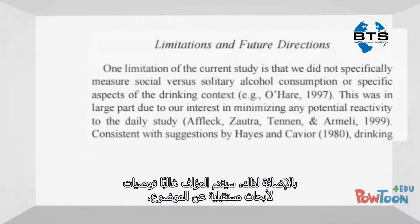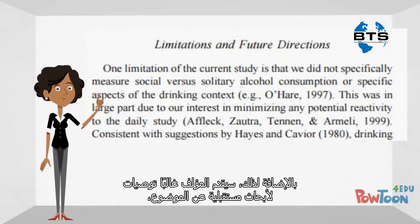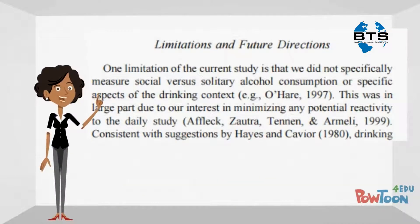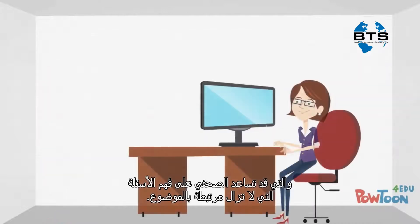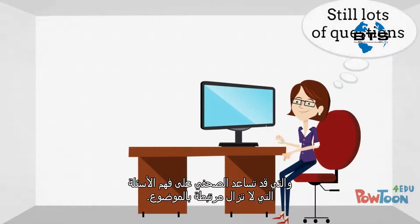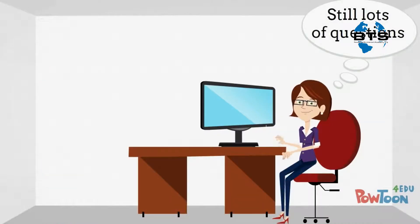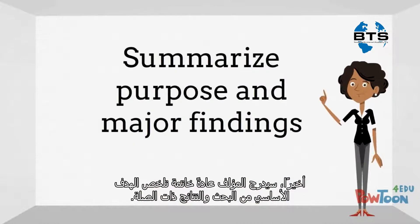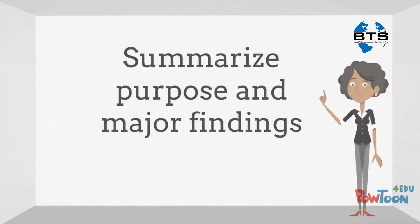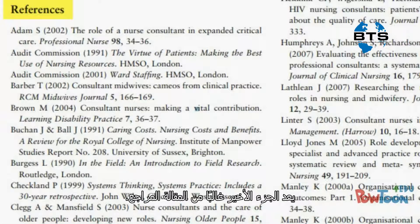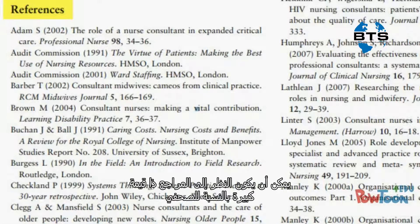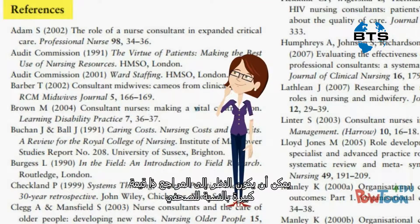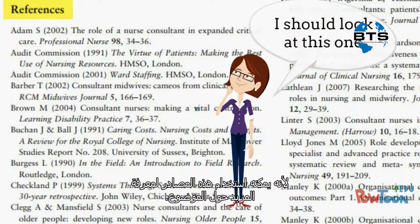In addition, the author will often provide recommendations for future research on the topic, which can help a journalist to understand what questions remain related to the topic. Finally, the author will usually include a conclusion that summarizes the main purpose of the research and the relevant findings. The final part of the article is usually the references. Looking at the references can be very valuable for a journalist, because they can use these sources to learn more about the topic.